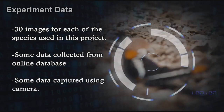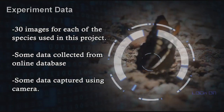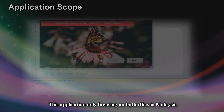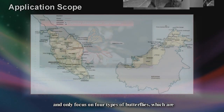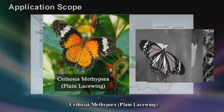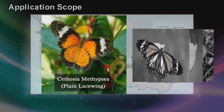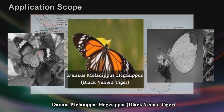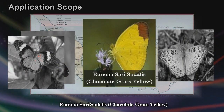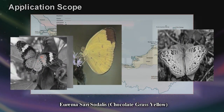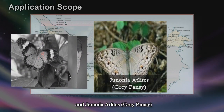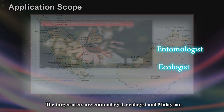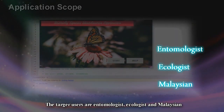Some data was collected from an online database and some data was captured using a camera. The application only focuses on butterflies in Malaysia, specifically four types: Cethosia methypsy (plain lacewing), Danaus melanippus (black veined tiger), Eurema sari (chocolate grass yellow), and Junonia atlites (grey pansy). The target users are entomologists, ecologists, and Malaysians.